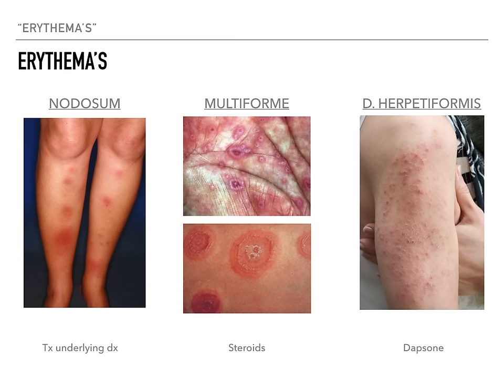For treatment: erythema nodosum — treat the underlying disease. If it's sarcoidosis or inflammatory bowel disease, treat those and the rash will go away. Erythema multiforme — give steroids. Dermatitis herpetiformis — give dapsone. Memorize dapsone; it's really high yield. They'll show you the blunted villi, show you the rash, and ask what's the treatment. The answer is dapsone.